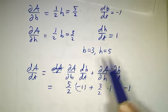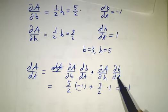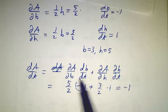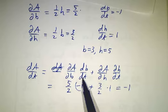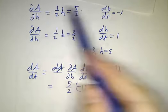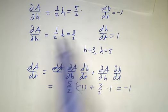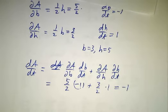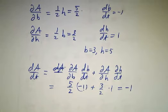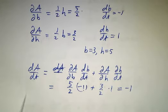The area is decreasing overall because the base getting smaller has more of an effect, since ∂A/∂b is bigger than ∂A/∂h. This is the simple case of the chain rule where we're taking a total derivative.